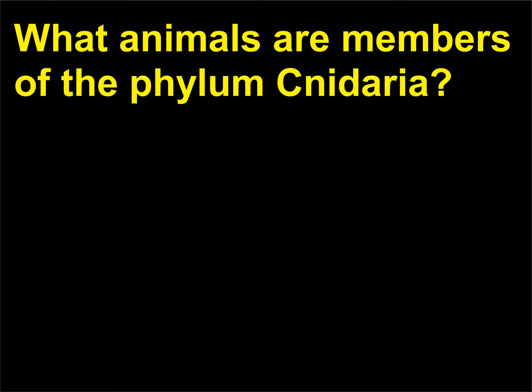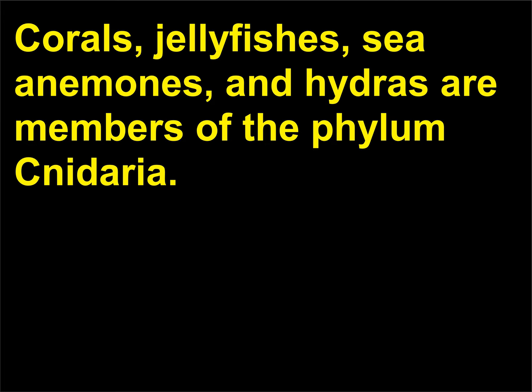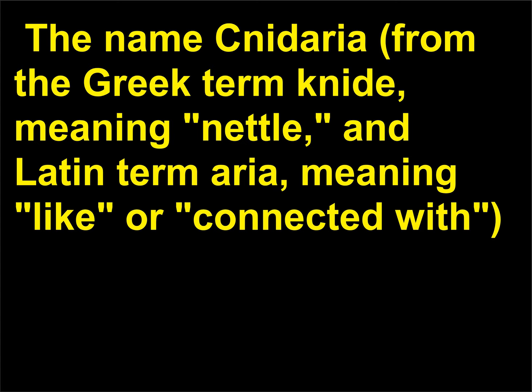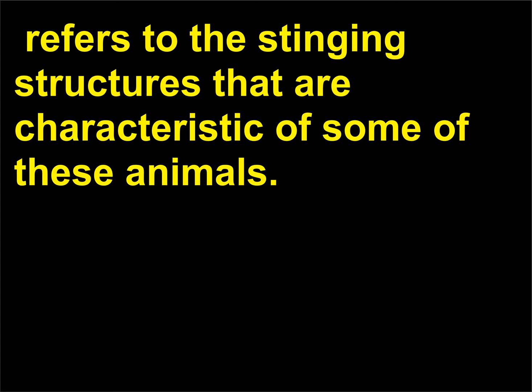What animals are members of the phylum Cnidaria? Corals, jellyfishes, sea anemones, and hydras are members of the phylum Cnidaria. The name Cnidaria, from the Greek term cnid meaning nettle, and Latin term aria meaning like or connected with, refers to the stinging structures that are characteristic of some of these animals.